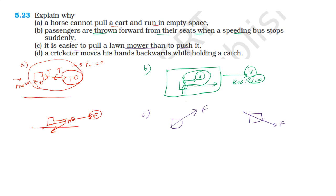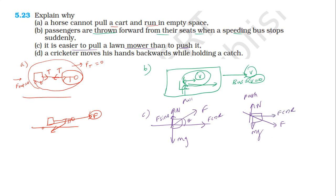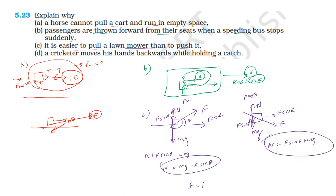For the pulling versus pushing case: when pulling the lawn mower at angle θ, the normal reaction N equals mg minus F sinθ. In the pushing case, N equals mg plus F sinθ. Therefore the normal reaction in the pushing case is greater than in the pulling case. Since friction equals μN, friction is greater when pushing, making it harder to push than to pull.